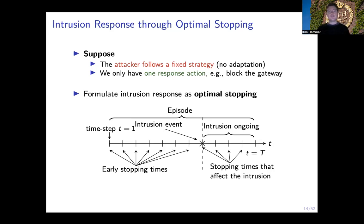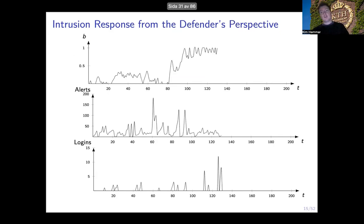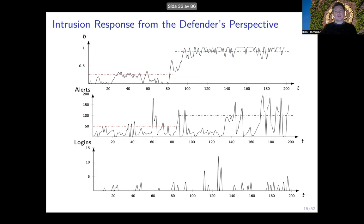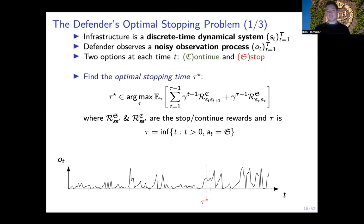The defender basically observes the infrastructure through a set of metrics — for example log files or alerts — and while observing these metrics that evolve over time, the defender has to decide at each point whether to continue monitoring or to stop and take the response action. More formally, we assume the system has an underlying state which is hidden from the defender. The defender instead observes noisy observations of the state, and based on these observations it has to find the optimal stopping time tau that maximizes some objective.